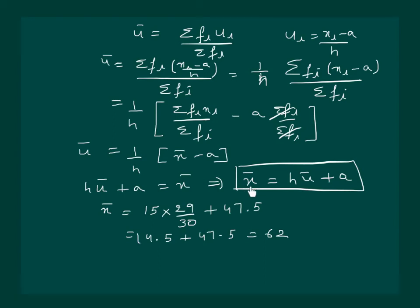The method discussed in this video is called the step deviation method. We should remember that in the step deviation method, the mean is given by x̄ equals H times ū plus A. However, there is a limitation: this method is applicable only if all the Di's have a common factor. We also observed that the mean obtained by all three methods is the same, and the assumed mean method and step deviation method are just simplified forms of the direct method.